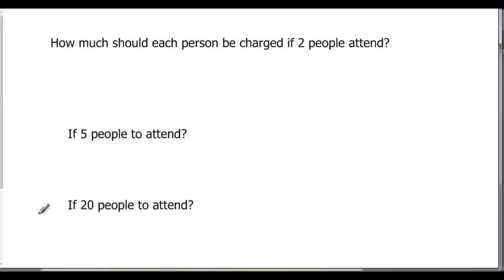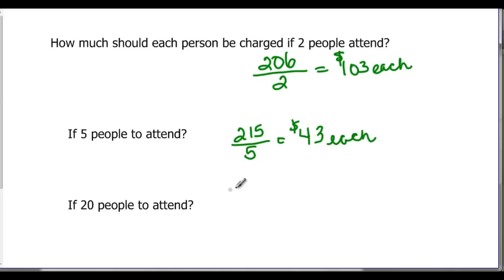How much should each person charge if two people attend? Go back and look. It was $206 for two people. Dividing by two we have $103 each. That's a lot of money for a party. If we have five that was $215 that we had to divide up now by five people. And that would go in forty three times. So we have $43 each. It's getting a little better. And when we had $260 divided by twenty it's $13 each.